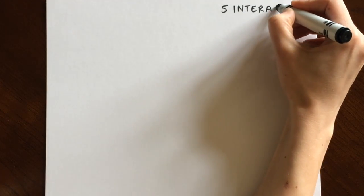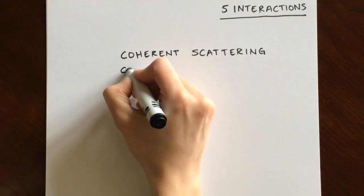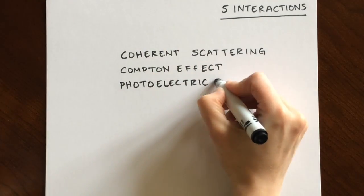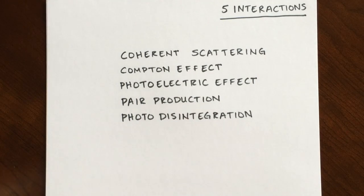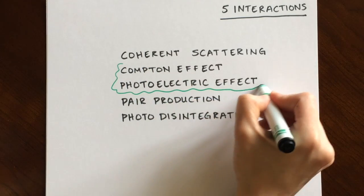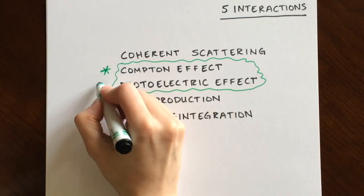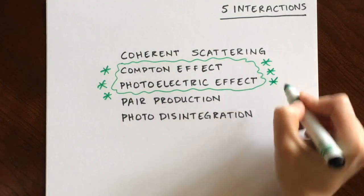There are five specific mechanisms of interaction between x-ray photons and matter: Coherent scattering, Compton effect, photoelectric effect, pair production, and photodisintegration. Compton effect and photoelectric effect are particularly important to diagnostic radiology and will be covered in greater detail in this video than the others.